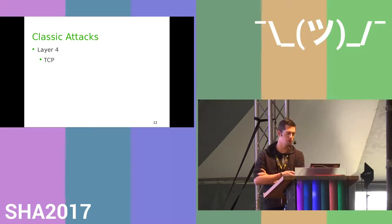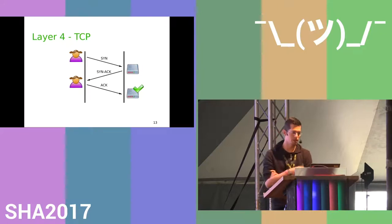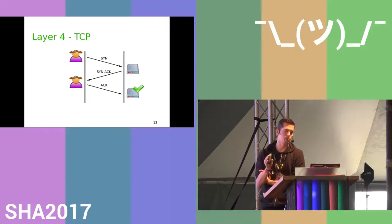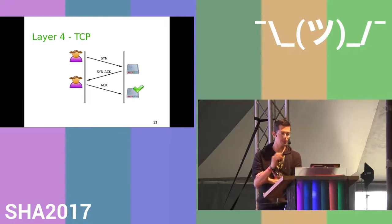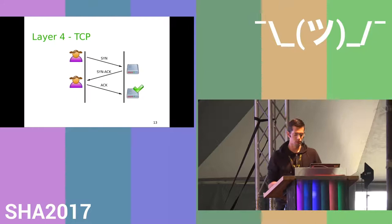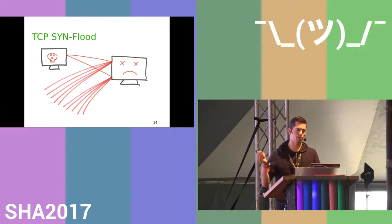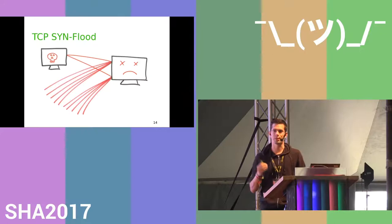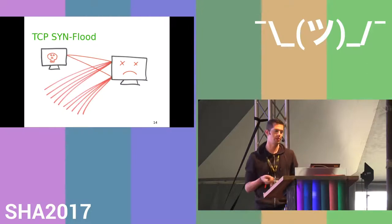Another classic attack is via layer 4 through TCP. To explain this, I need to introduce the three-way handshake: the client sends a SYN packet, the server answers with a SYN-ACK, and then the client replies with an ACK — only then is the connection established. The attack sends lots of spoofed connections; the server tries to answer but never gets a reply, and eventually becomes overloaded and can't take new connection requests.